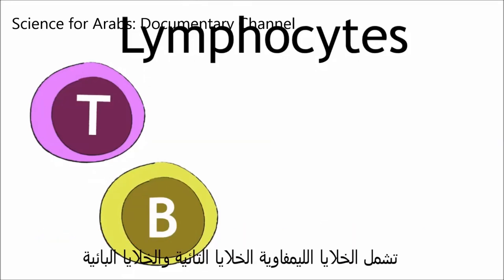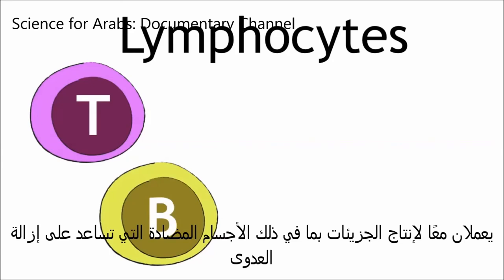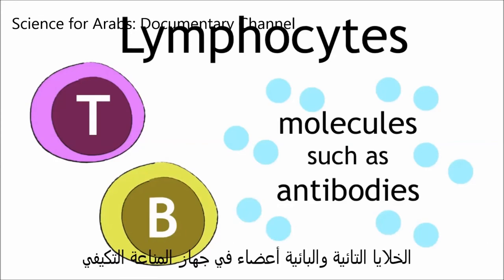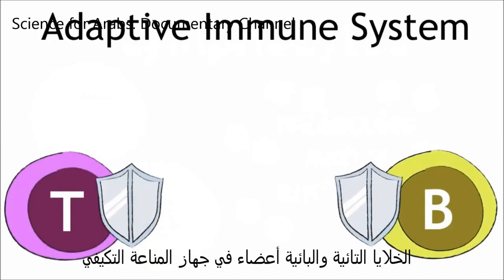Lymphocytes include T cells and B cells. They work together to produce molecules, including antibodies, which help to clear the infection. T and B cells are members of the so-called adaptive immune system.